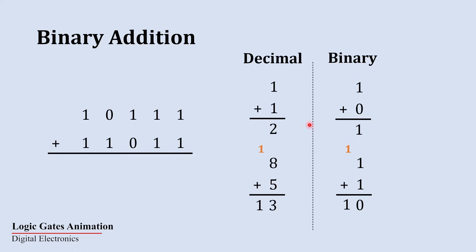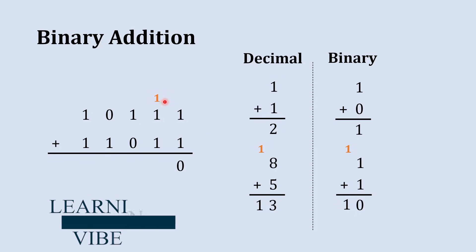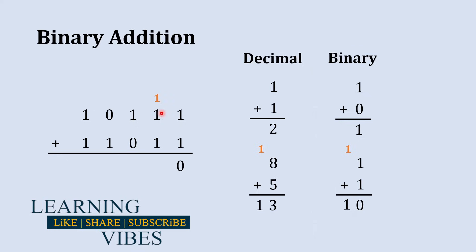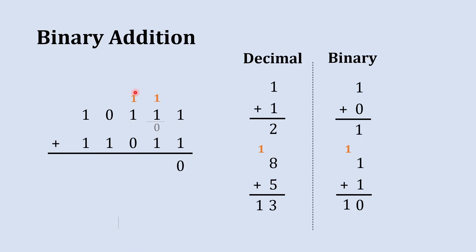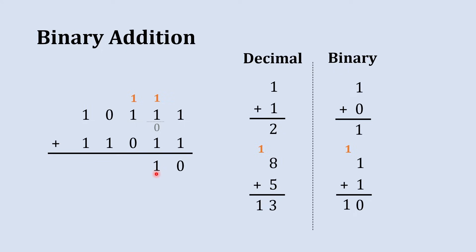Now back to the example. Adding the rightmost column: 1 plus 1 gives sum 0 and carry 1 to the next column. Next column: 1 plus 1 gives sum 0 and carry 1. Then 0 plus 1 gives 1 with no carry. Next: 1 plus 1 gives sum 0 and carry 1.